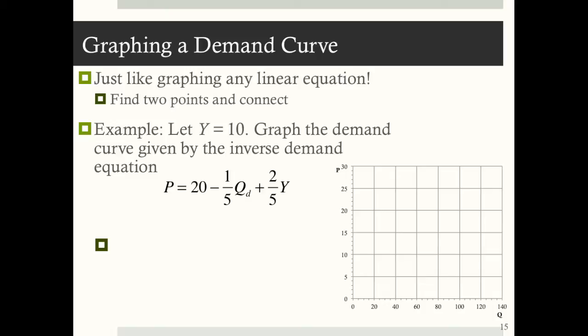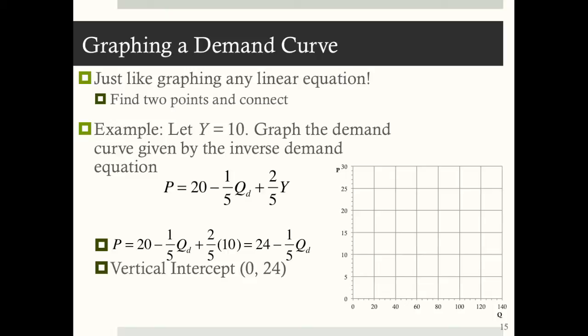When we graph a demand curve, we find two points and connect them. Suppose income Y equals 10; graph the demand curve given by P equals 20 minus one-fifth Q sub D plus two-fifths Y. First, simplify by plugging in Y equals 10 to get P equals 24 minus one-fifth Q sub D. The vertical intercept is (0, 24) and the horizontal intercept is (120, 0). Connecting these two points gives the downward-sloping demand curve.